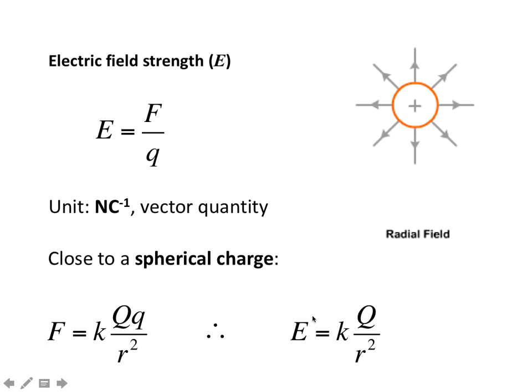Close to a spherical charge, it's given by this equation. It's proportional to F divided by Q, and F equals k Q1 Q2 over r squared, as we've seen. So E equals k Q over r squared, which is dividing by one Q.